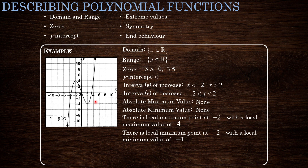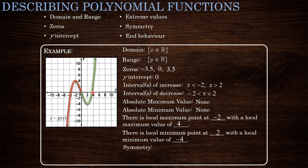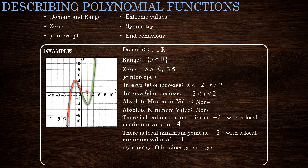This function does have symmetry. Notice what's happening on each side of the y-axis: on the right (positive x values) we have one curve, and on the left (negative x values) we have another. What's happening on the right side is the opposite of the left side — for example, at x equals 2 the y value is negative 4, but at x equals negative 2 the y value is positive 4. Same magnitude, opposite signs. This is true for any x value, meaning we have odd symmetry: g(negative x) equals negative g(x).